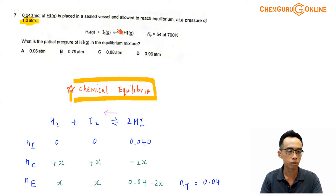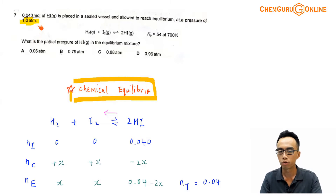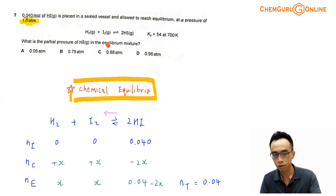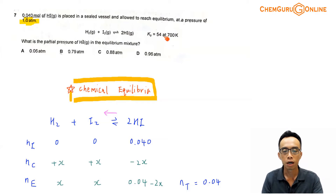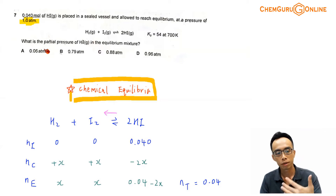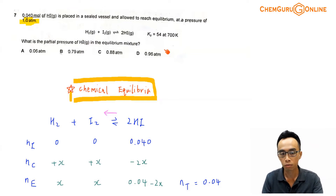Now let's take a look at question 7. 0.040 mol of HI is placed in a sealed vessel and allowed to reach equilibrium at a pressure of 1.0 atmosphere. The equation given is H2 + I2 giving 2HI, everything in the gaseous phase, and the Kp is given as 54 at a certain temperature. So what is the partial pressure of HI in the equilibrium mixture? We have 4 options to run through.